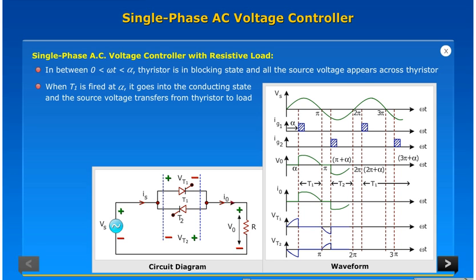When T1 is fired at alpha, it goes into the conducting state and the source voltage transfers from thyristor to load.